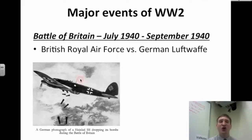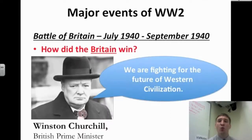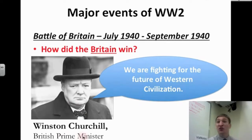Next, Hitler and the Nazis go further west. The Battle of Britain happens from July 1940 to September 1940 — it's the Battle of the Air. The British Royal Air Force faces off against the German Luftwaffe, the German Air Force. Here you see a picture of a German Heinkel III dropping bombs on London. Britain wins in part due to strong leadership from Prime Minister Winston Churchill, who says, 'We are fighting for the future of Western civilization.'